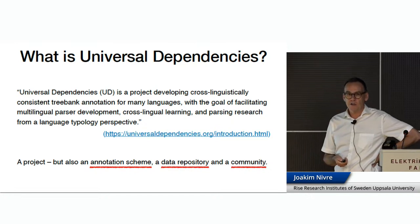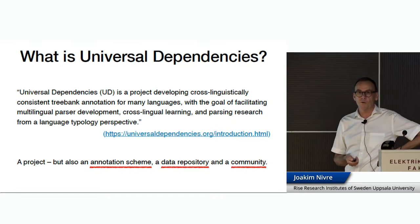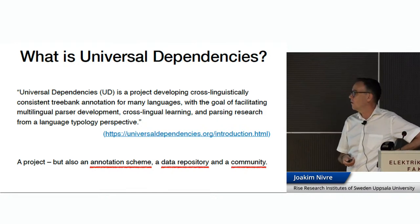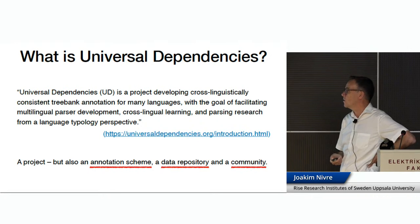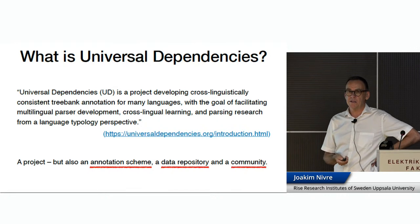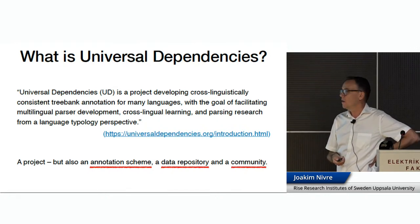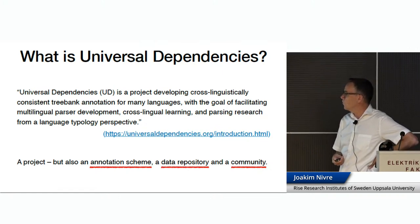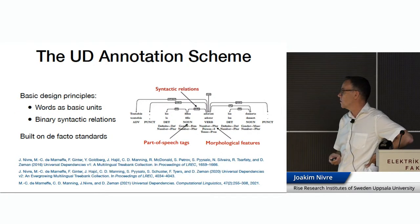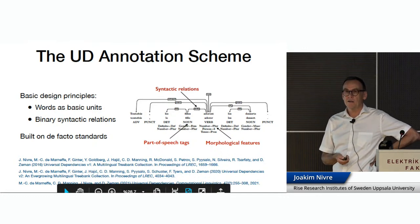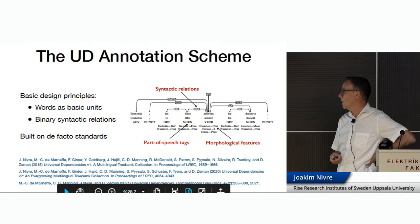Starting with the annotation scheme, which is very central because it's all about linguistic annotation of many languages. Very simply, the two basic design principles of the UD annotation are: first, that it takes words as the basic units — which, as we will see, is challenging in itself — and then we build representations using binary syntactic relations connecting words, and try to do this in a consistent way across many different languages.